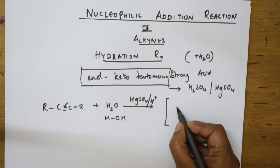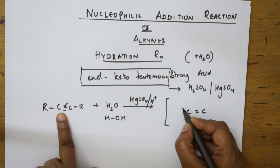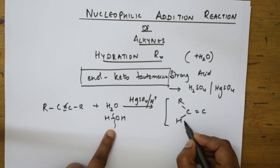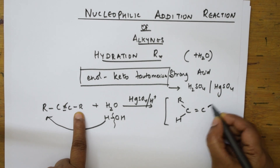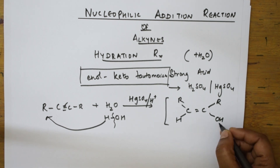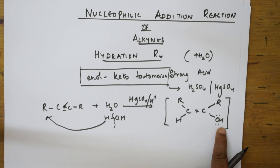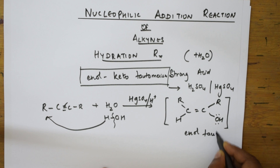When water adds to the alkyne, C=C forms. One H from water adds to one carbon bearing the alkyl group R, and the OH adds to the other carbon, also bearing alkyl group R. The resulting compound has an alcoholic (OH) group — this is called the enol tautomer. 'Enol' means it contains an alcoholic group.